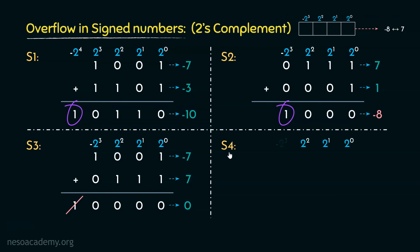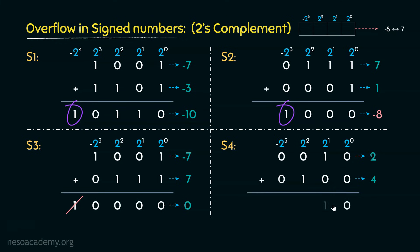Scenario 4: the pattern 0 0 1 0 is 2, and 0 1 0 0 is 4. Performing the addition: 0+0 gives 0; 1+0 gives 1; 0+1 gives 1; 0+0 gives 0. The 1's are placed underneath 4 and 2, giving the value 6 — which is correct since 2 plus 4 equals 6. No overflow has occurred because the computer can easily accommodate this value in 4-bit storage.